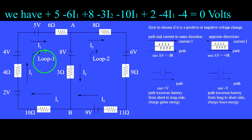Traversing the loop in the opposite, or counter-clockwise direction, would negate each term, and thereby change nothing. When solving a circuit problem, you have to draw a very big picture, to have room enough to label the directions of each current and the directions of each loop.